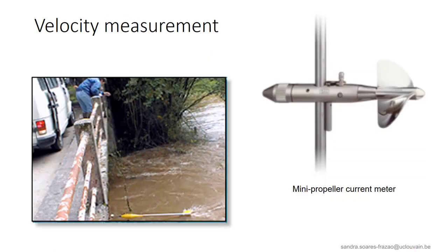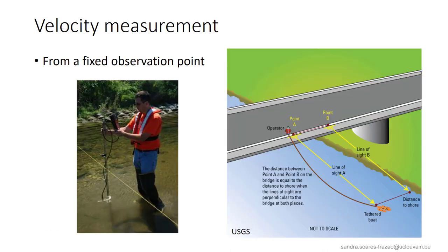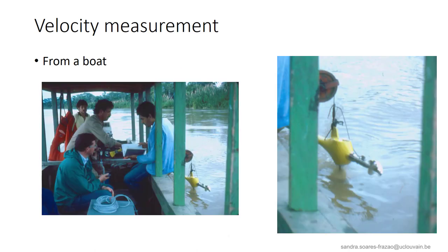A first possible instrument to measure the velocity at different points in the cross section is the mini-propeller current meter. The rotation speed of the propeller can be directly related to the flow velocity. This point measurement can be achieved from a fixed observation point, for example by standing in the river for smaller rivers, or from a bridge. It is also possible to perform point measurements from a boat traveling along the cross section. This will mainly depend finally on the size of the river.